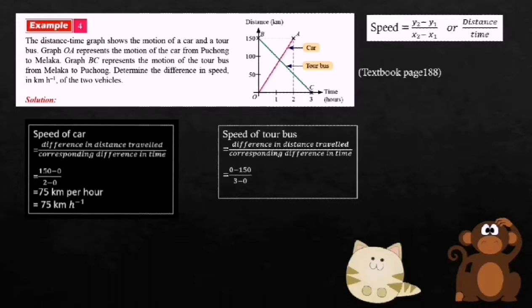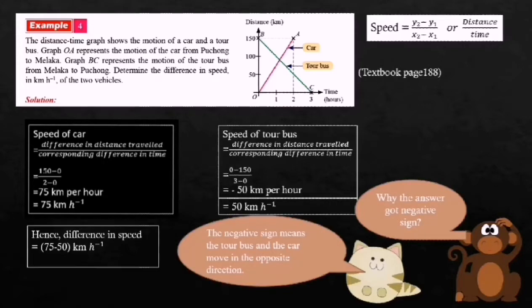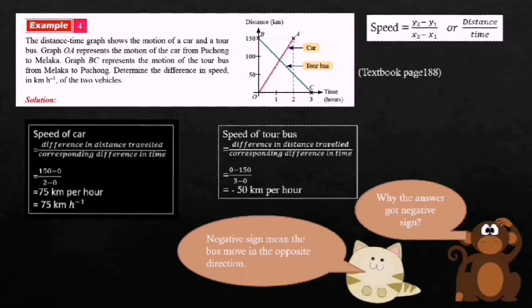Now we find the speed of the tour bus. Speed equals 0 minus 150 divided by 3 minus 0, which equals negative 50 kilometers per hour. The negative sign means the tour bus and the car move in opposite directions. But we cannot write the answer for speed as negative, so we change it to positive: the speed of the tour bus equals 50 kilometers per hour.